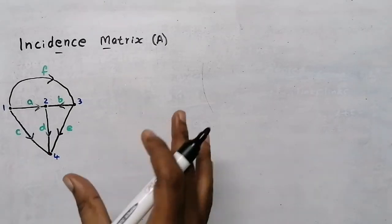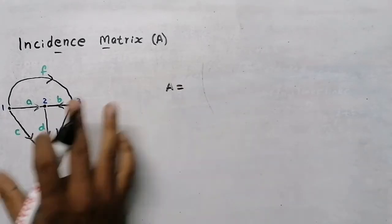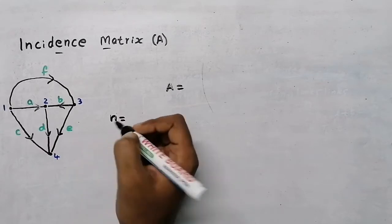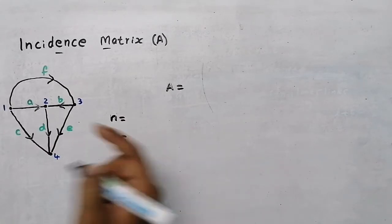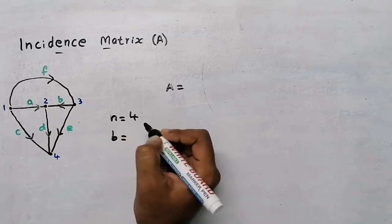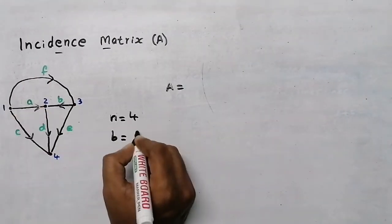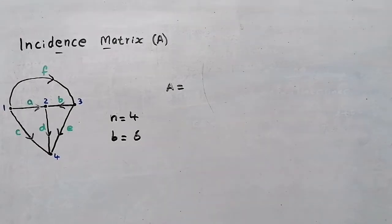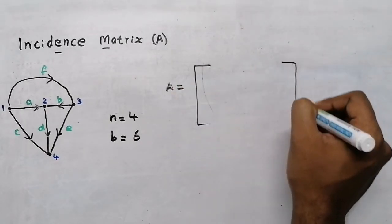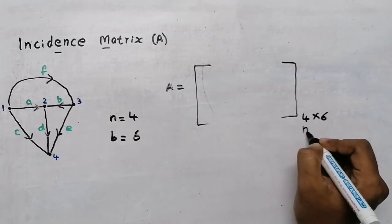Now how can we find the incidence matrix A from this graph? For this graph there are nodes and branches. The number of nodes is four — one, two, three, and four. The number of branches is six — one, two, three, four, five, and six. So our incidence matrix will be a 4×6 matrix, where four is the number of nodes and six is the number of branches.